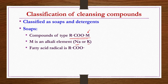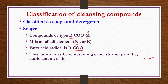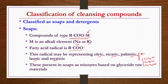The fatty acid radical R-COO· may represent oleic, stearic, palmitic, lauric, myristic, and others — such as C17H33-COO, C17H31-COO, C17H29-COO — these details were also seen in the chapter on oils and fats industry. These represent in soaps as mixtures based on glyceride raw materials.